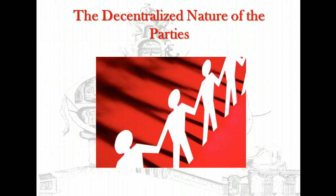The two major parties are often described as though they were highly organized, close-knit, well-disciplined groups. However, neither party is anything of the kind. Rather, both are highly decentralized, fragmented, disjointed, and often beset by factions and internal squabbling.